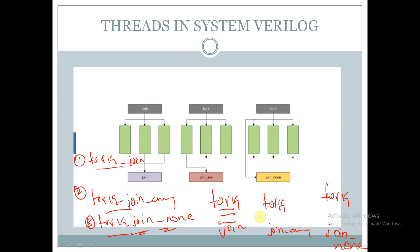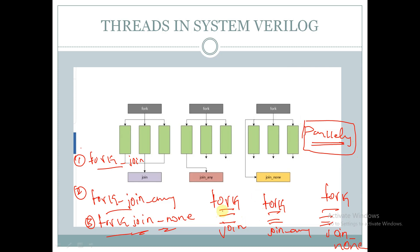Any code which is written in these threads will be executed parallelly. In fork-join it is a parallel process — all the code defined inside the fork-join is executed parallelly, and after that execution completes, only then will the compiler come out of the fork-join block.